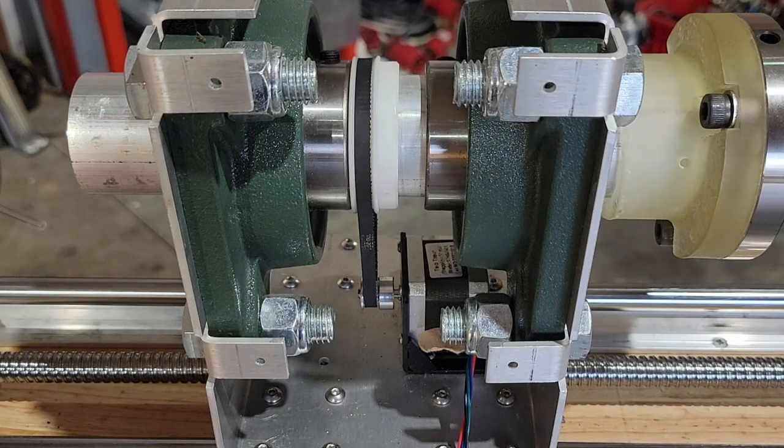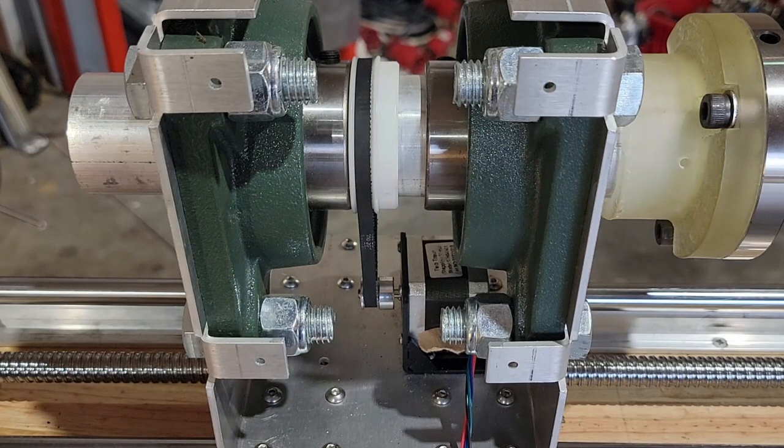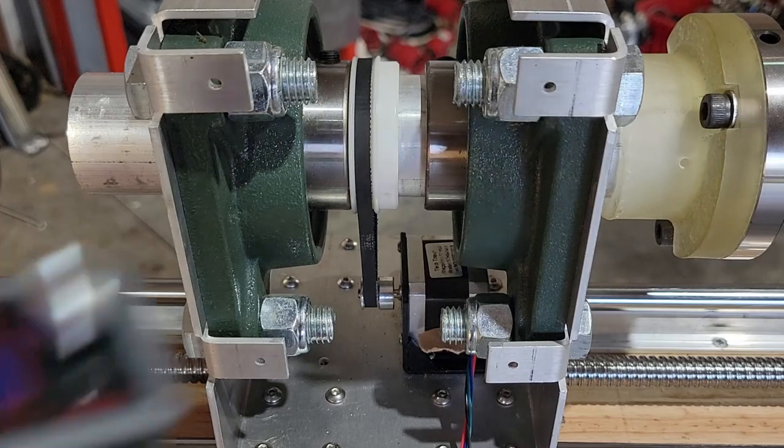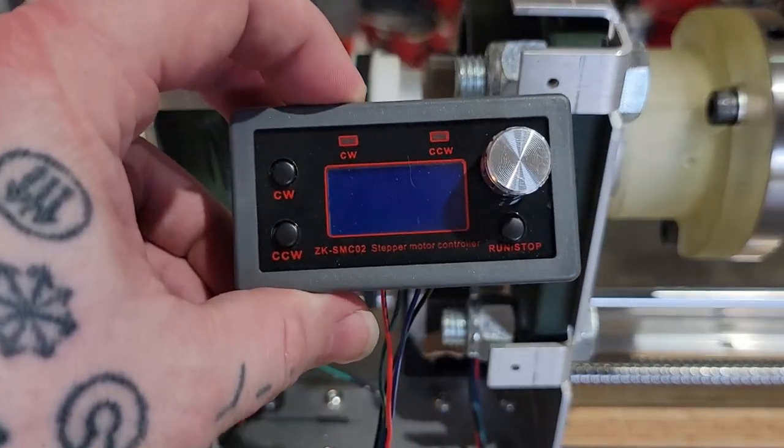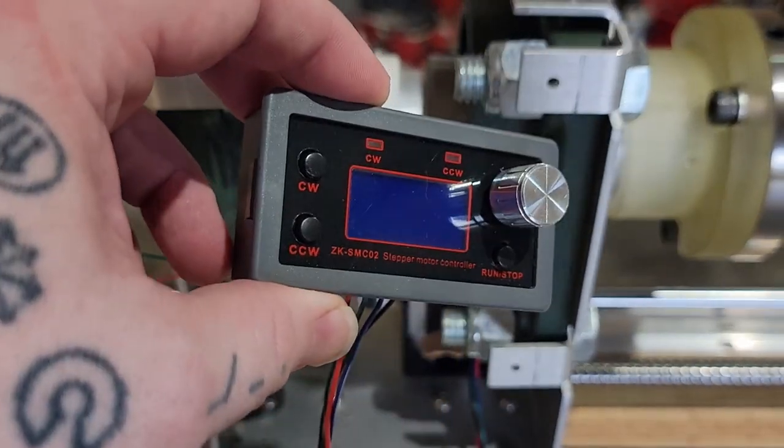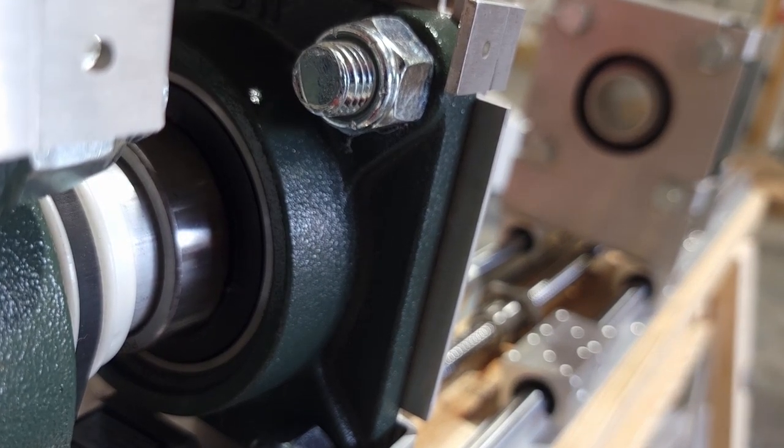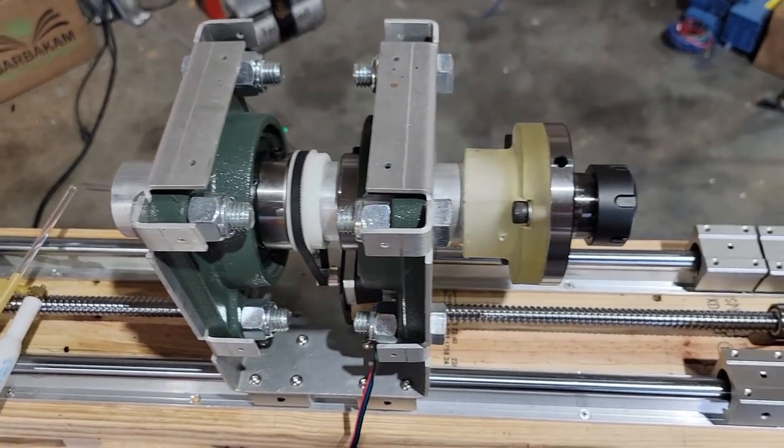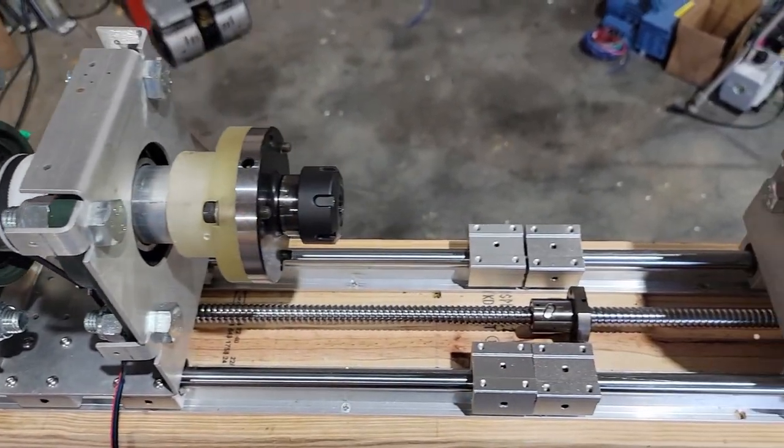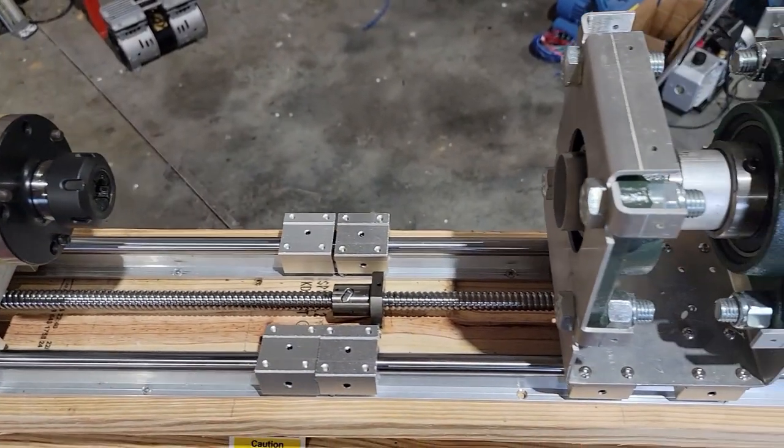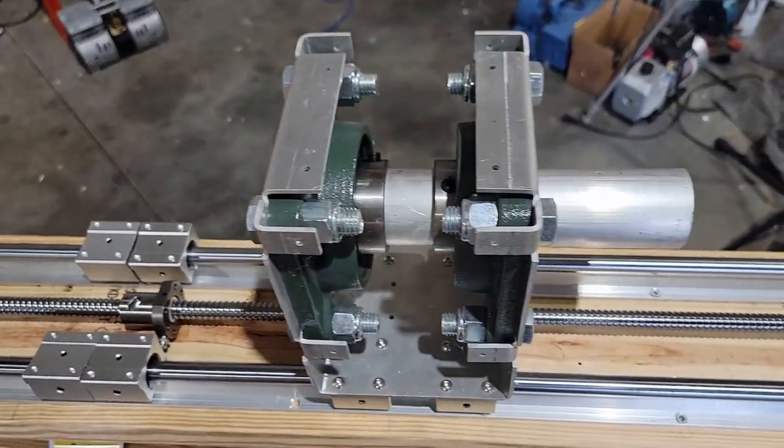I don't have a driver or a control board built or even laid out for this yet, so I've been testing it using this little stepper controller driver module that I bought on Amazon. As far as I'm concerned, the proof of concept is basically finished. I just need to replicate what I've done to the headstock onto the tailstock, and then finish building the enclosure and the fire carriage, and then it'll be ready to go.